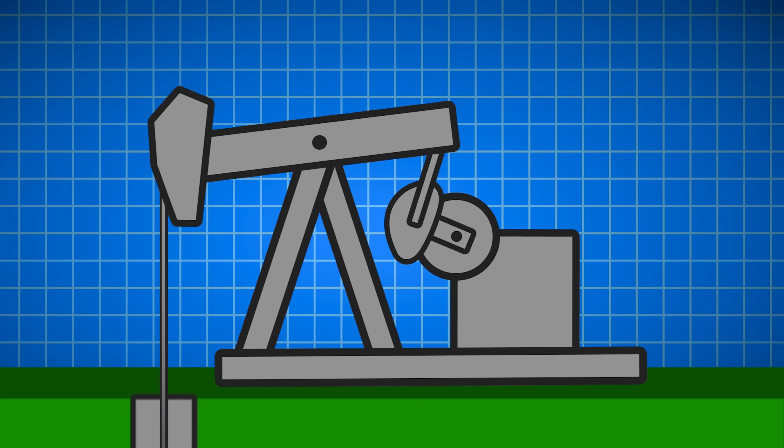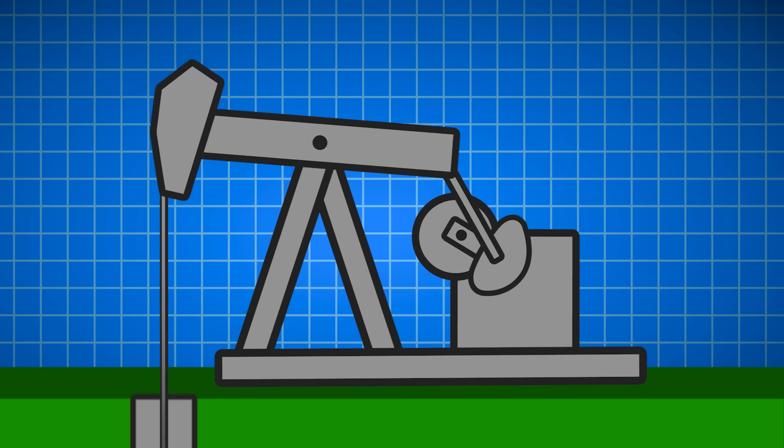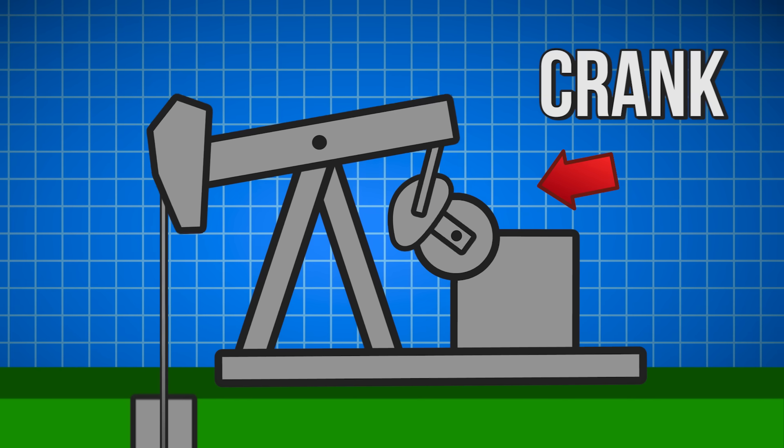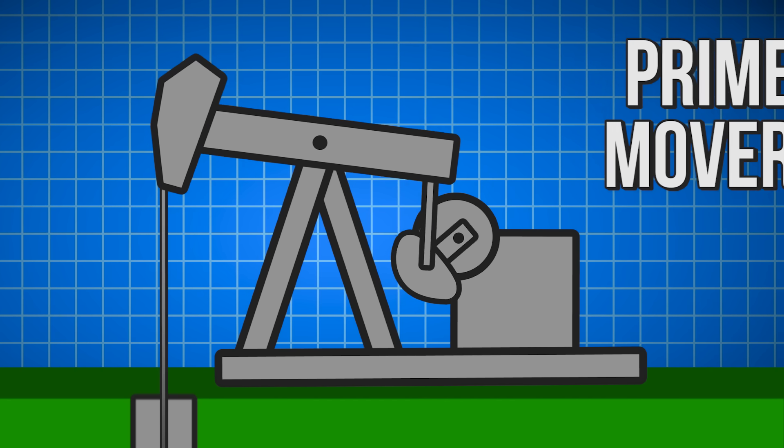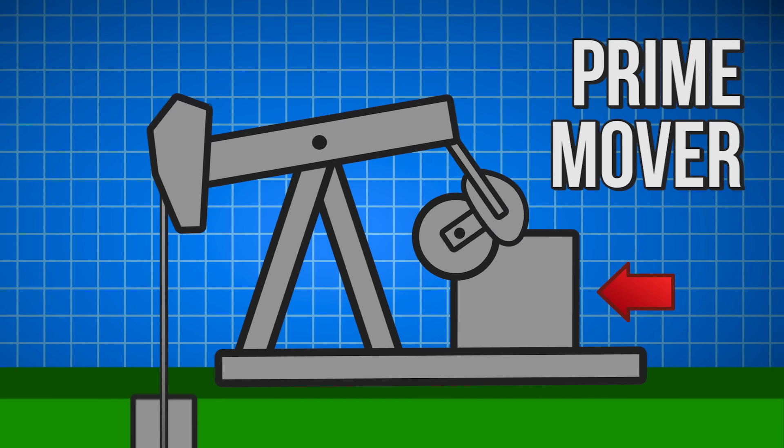These move up and down due to the rotational movement from a smaller arm called the crank. The crank usually has a counterweight to balance out the forces on the oil derrick and it gets its power from the prime mover, usually through a gearbox.